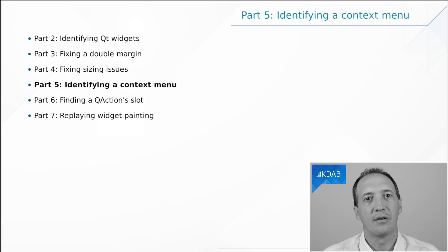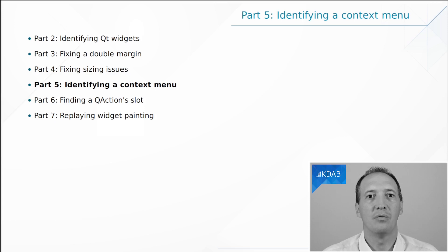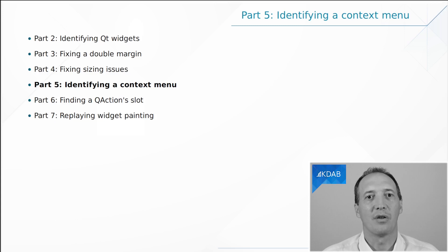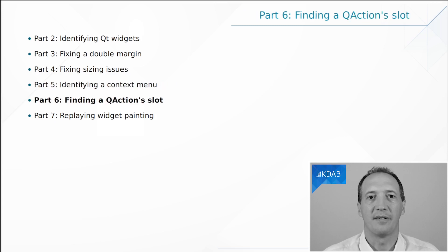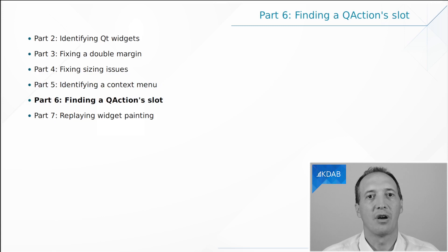Then we will have a look at identifying context menus. They are a little bit different from widgets because of course they go away whenever you click somewhere, so they are a bit harder to catch. We will see how to find where the code is creating the menu and where it is actually showing the menu, and that would be useful also for part six where we want to see what code is being triggered when we click on one of the actions in the menu — we can do that even if we don't actually know the code and will find where the slot is written and executed.